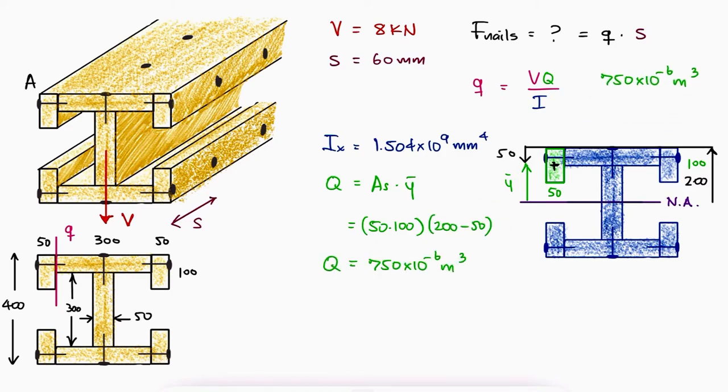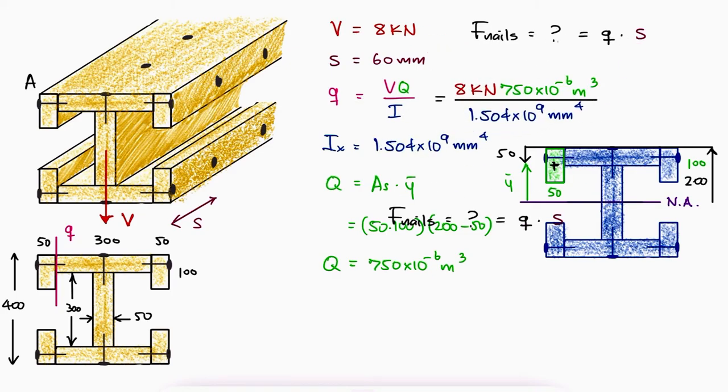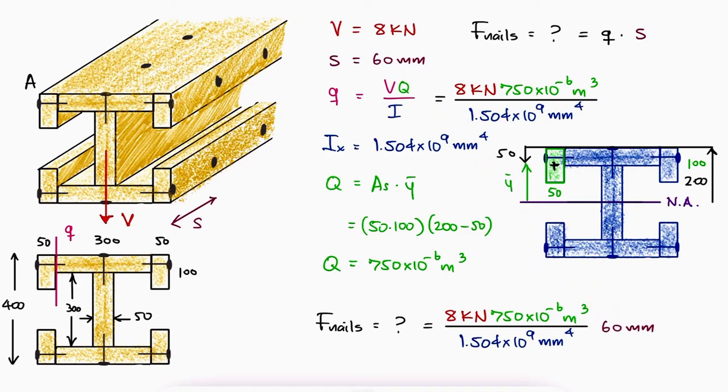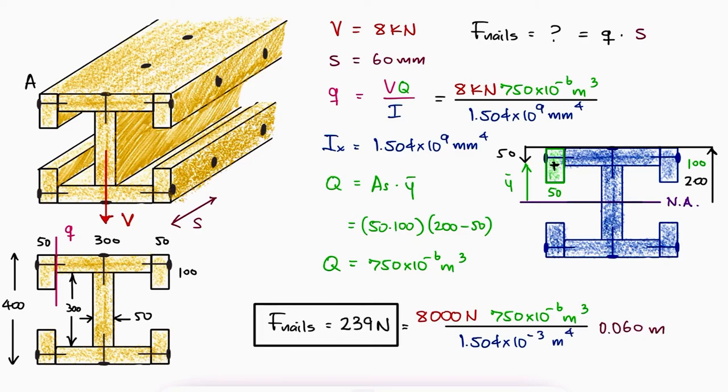With the value for Q, the shear force V, and the given second moment of area, we would have the shear flow q, which when multiplied by the distance between nails, would give us a force in each nail equal to 239 newtons.